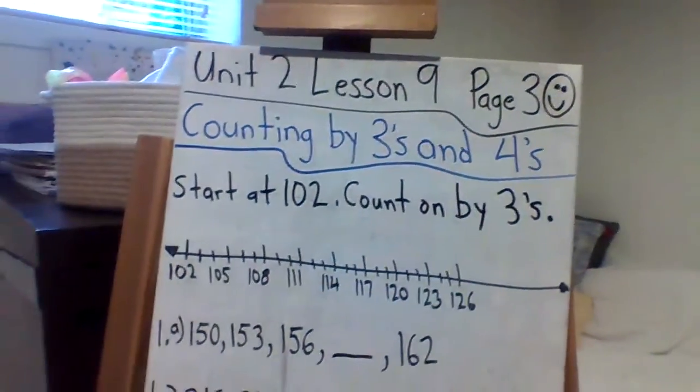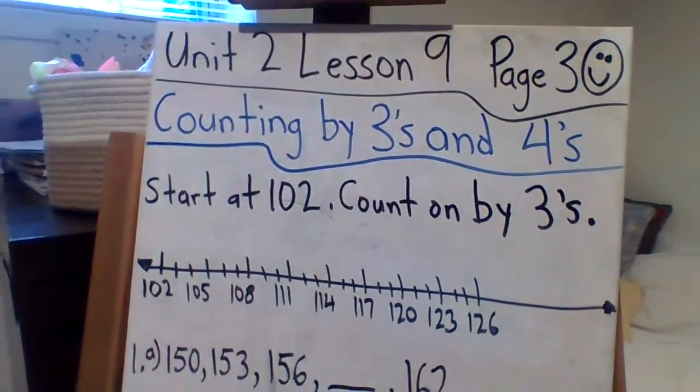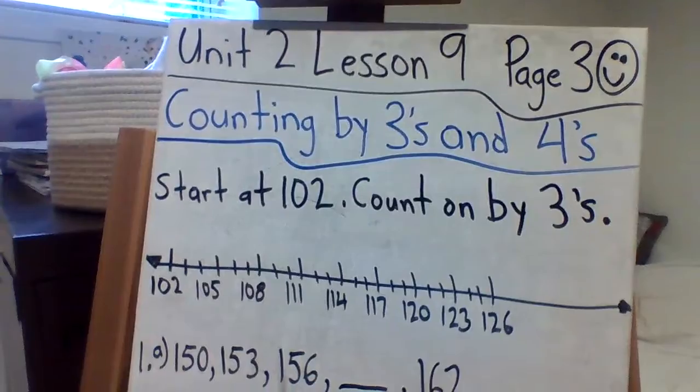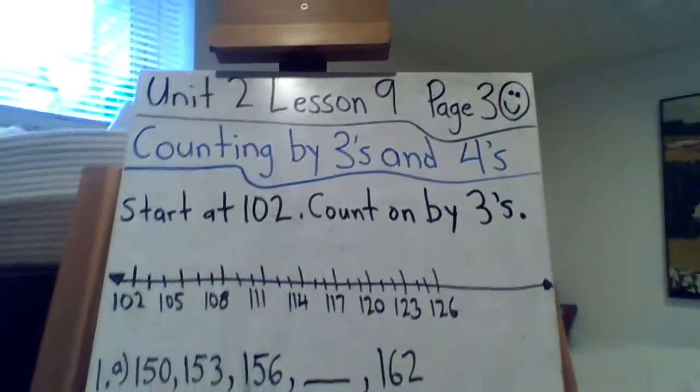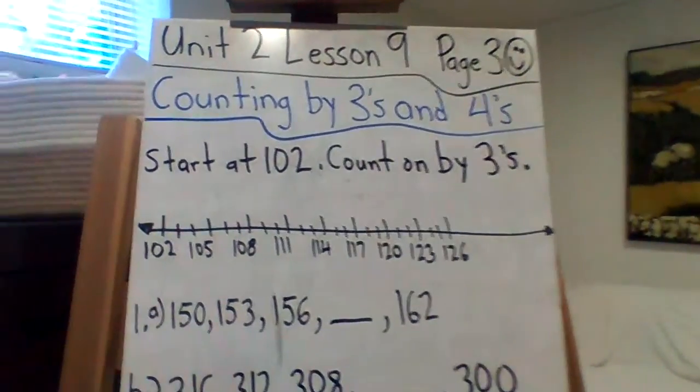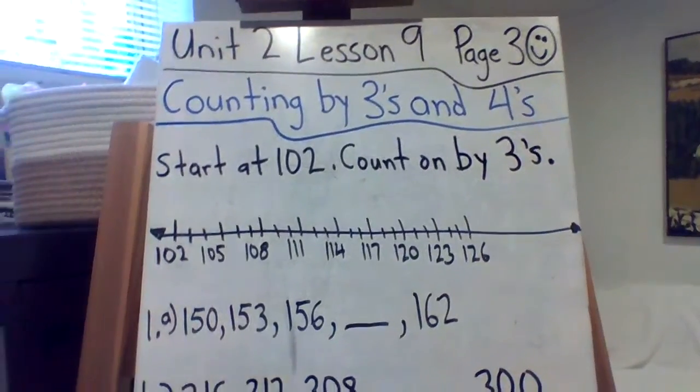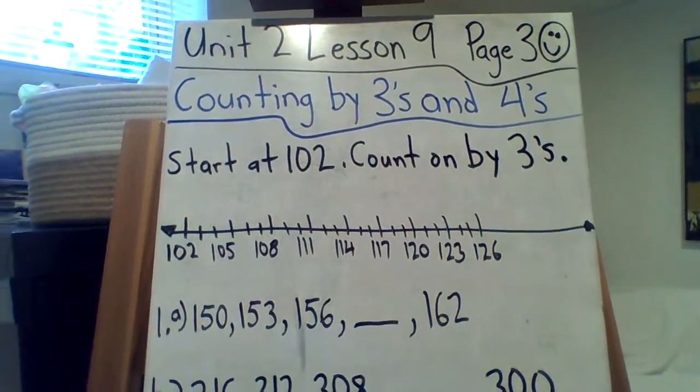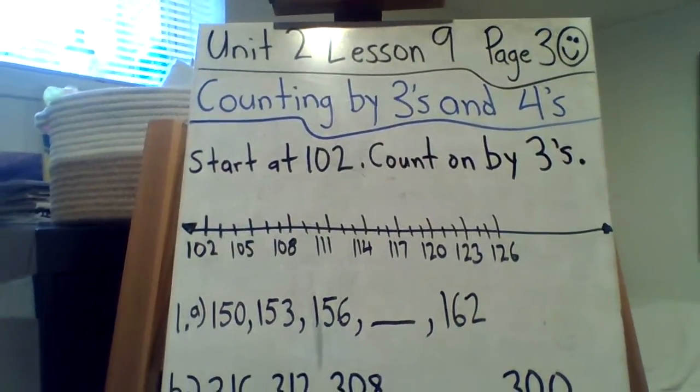So, unit 2, lesson 9, page 30, counting by 3's and 4's. We're using larger numbers, but we're doing easy adding and subtracting. Counting on by 3 or 4. Just kind of hopping along the number line.